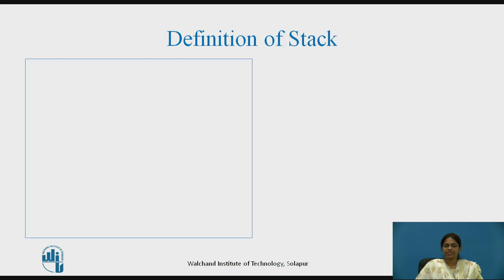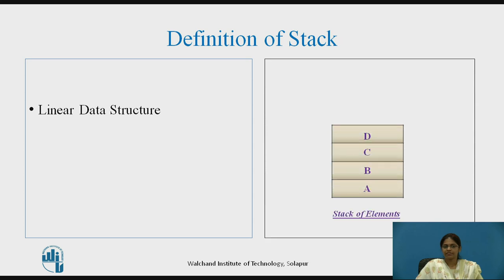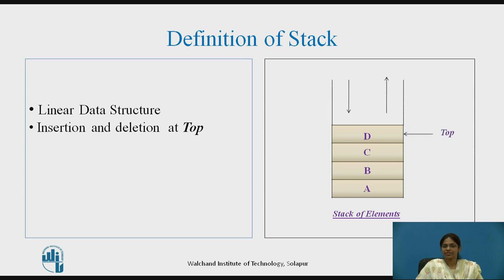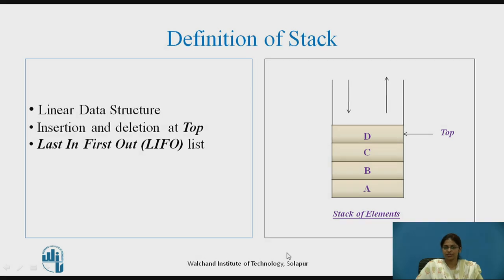Let us see the definition of Stack. Stack is a linear data structure where insertion and deletion takes place at only one end called the top. The top is the pointer from where insertion as well as deletion of elements takes place. Stack follows a LIFO structure — the last element which is added to the stack is the first element which is removed. That is why stack is also called a Last In First Out structure.